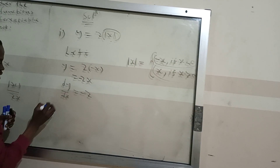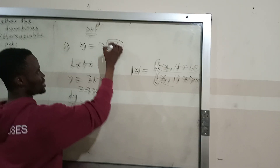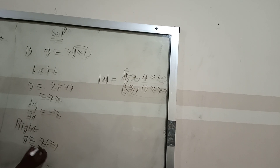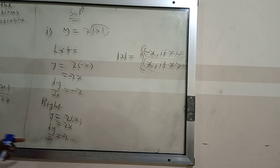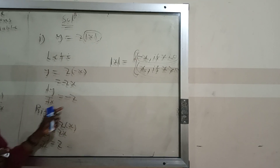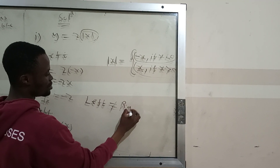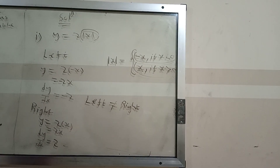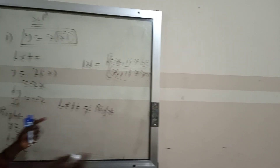For the right hand side, we substitute positive x in place of |x|, so we get y equals 2 times x, which is 2x. Finding dy/dx gives us positive 2. So the left hand side derivative is negative 2, and the right hand side derivative is positive 2. Since the left hand side is not equal to the right hand side, the function y = 2|x| is not differentiable.